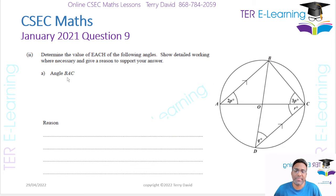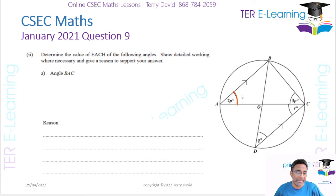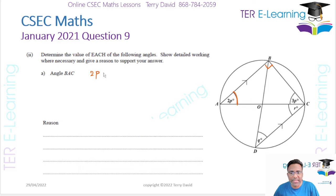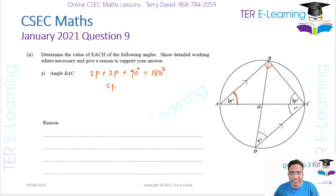The next part says: determine each of the following angles and show detailed working when necessary. We want angle BAC, which is equal to 2p. We already know that angle ABC is 90 degrees, so in triangle ABC we can say that 2p plus 3p plus 90 degrees is equal to 180 degrees.